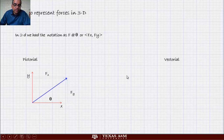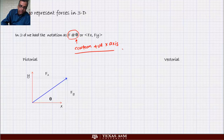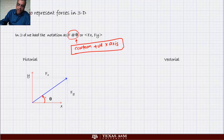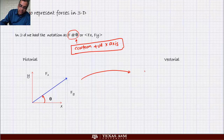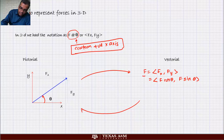We have several ways to represent forces in 3D, but before we do that let us review what we had in 2D. We had the notation that looked like F at angle theta, where theta was counterclockwise from the positive x-axis. Here is our picture — this is counterclockwise from the positive x-axis. We knew how to convert from pictorial to vectorial: the procedure says F equals (Fx, Fy), and the notation is F at theta.